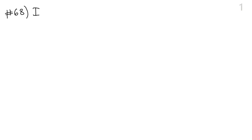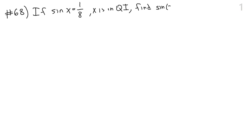The next problem is number 68. You are given that sine of some angle x is one over eight and that x is in quadrant one. You're asked to find three things: sine of 2x, cosine of 2x, and tangent of 2x. These all involve double angle identities.